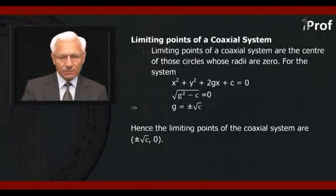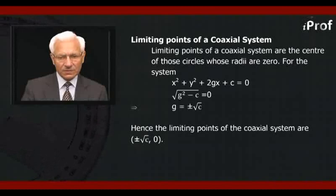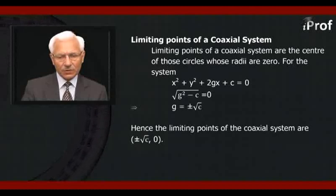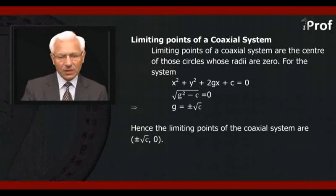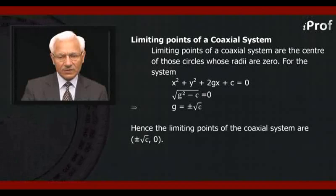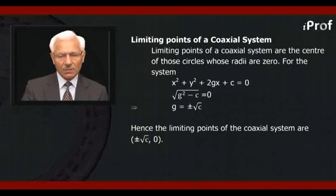The limiting points of a coaxial system are the centers of those circles whose radii are zero. For the system x² + y² + 2gx + c = 0, if it is a limiting point, then its radius equals zero, that is, √(g² - c) = 0, giving g = ±√c. Hence, the limiting points of the coaxial system are (±√c, 0).